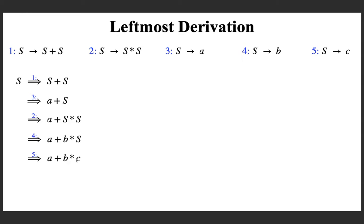The string is 'a plus b star c'. This grammar is in fact a part of the context-free grammar for the definition of any high-level programming language like the C programming language. Of course, there are rules for other operators like minus and slash (division). This is a derivation which shows how you can derive the expression 'a plus b star c' from the start symbol using a sequence of 5 steps.